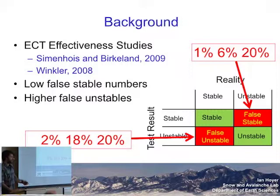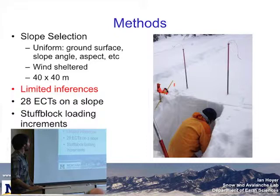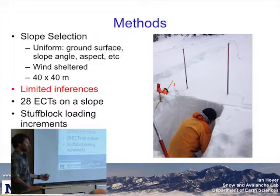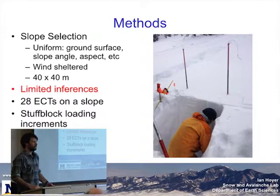I also wanted to see how my results line up with the effectiveness of the ECT. For slope selection, I went out picking the most boring, uniform slope I could find, trying to get the stratigraphy exactly the same, the snow depth exactly the same, slope angle, aspect, wind sheltered — just big enough to do the tests. I do 28 ECTs on a slope using the loading increments of a stuff block to minimize differences in tapping across the day.